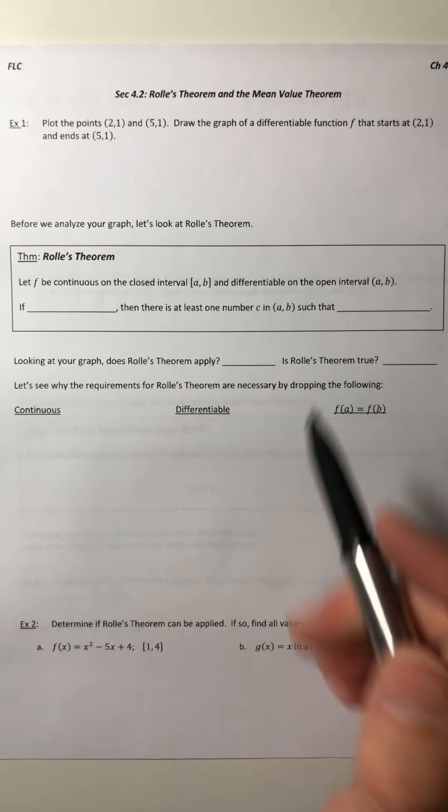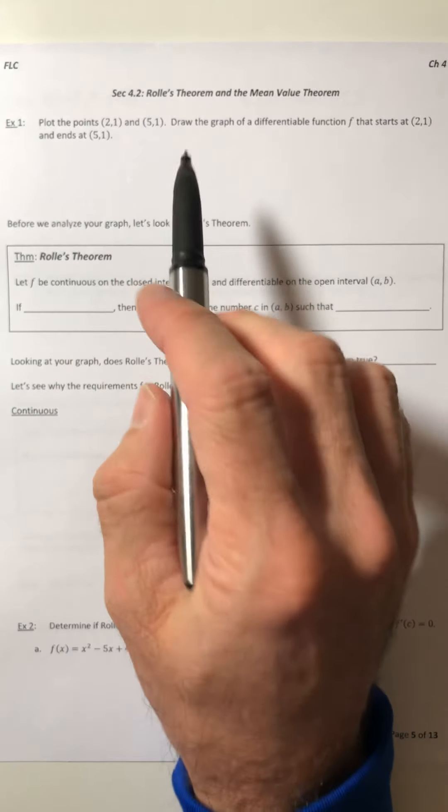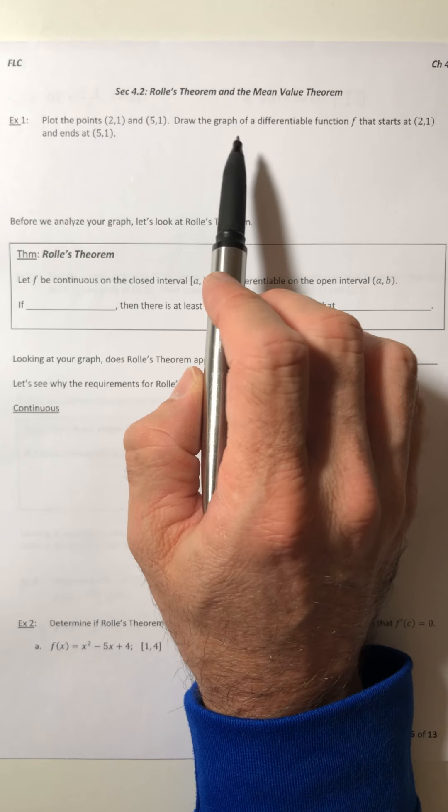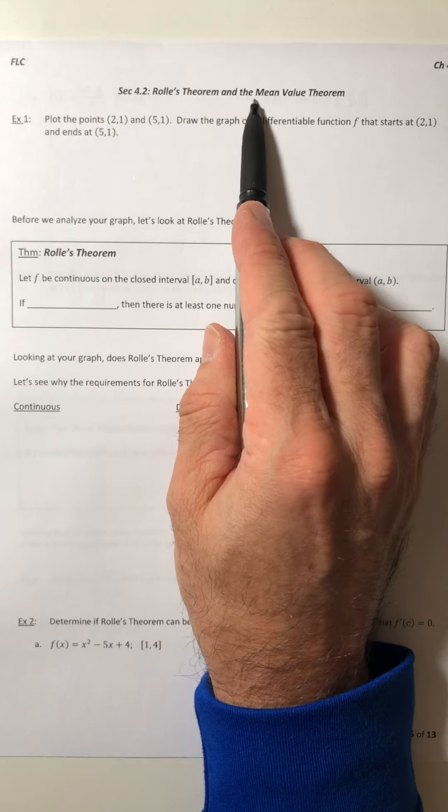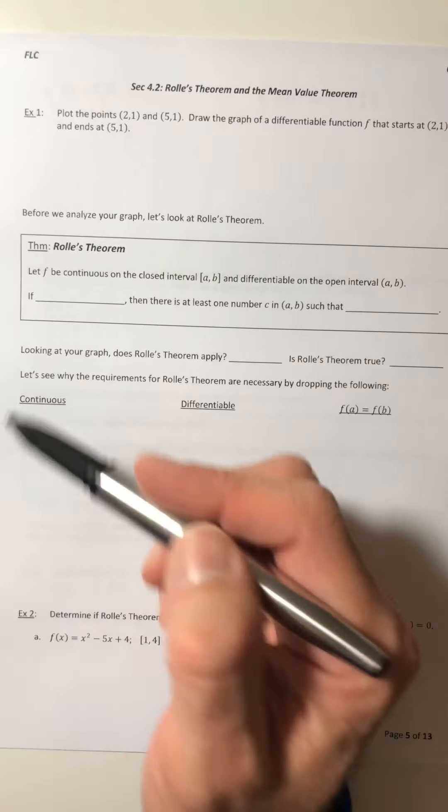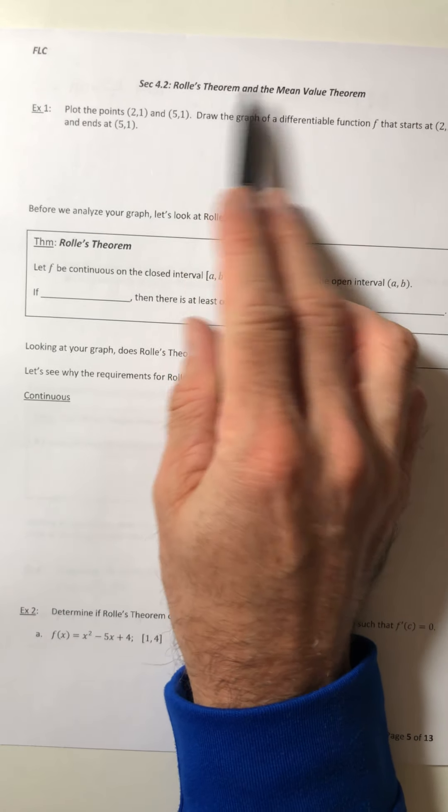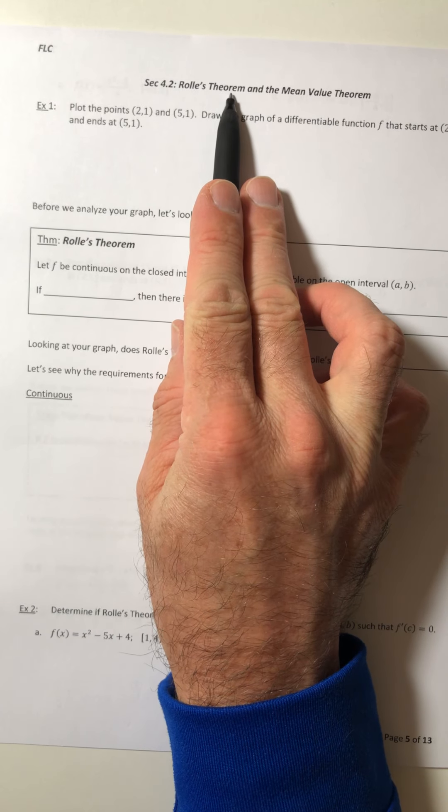All you mathletes, welcome to class today. We are going to start and go over section 4.2, which is about two different theorems, Rolle's Theorem and the Mean Value Theorem. Okay, so we're going to get a visual going so we can understand what each of these mean. But first, we're just going to talk about Rolle's Theorem.